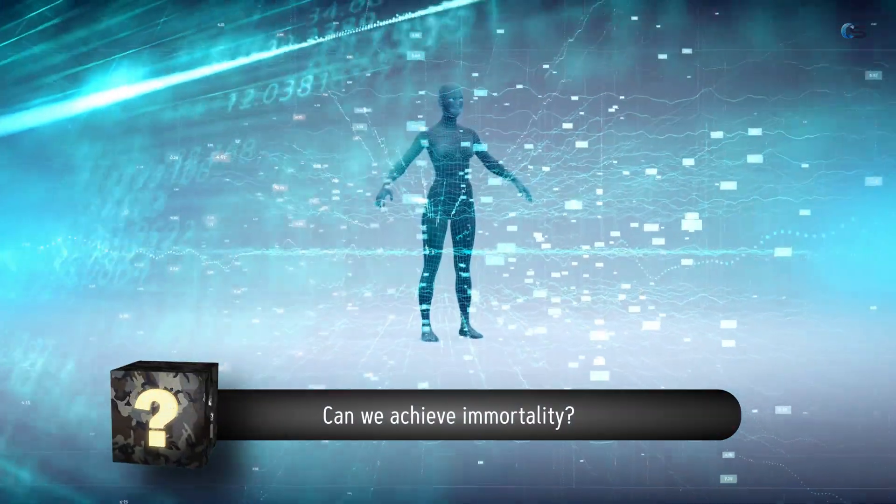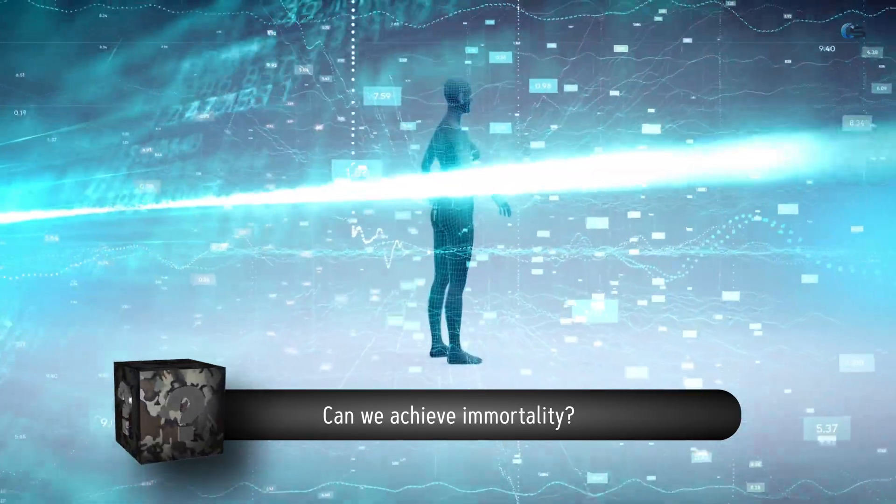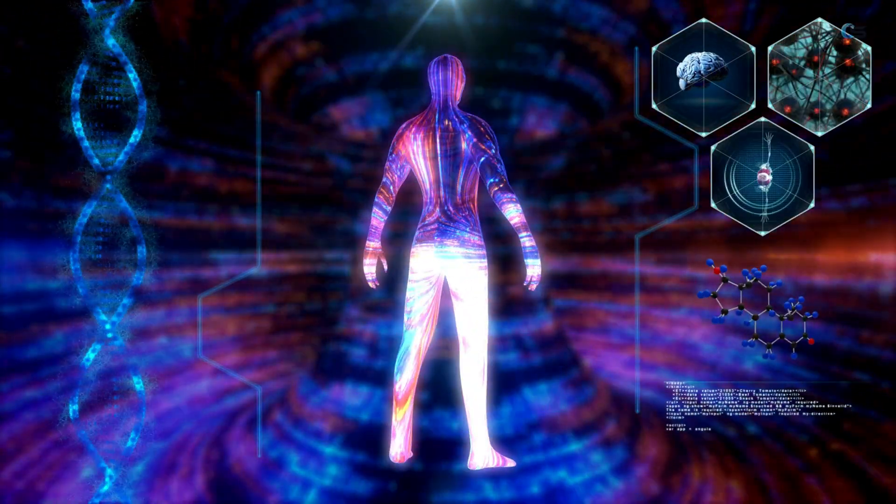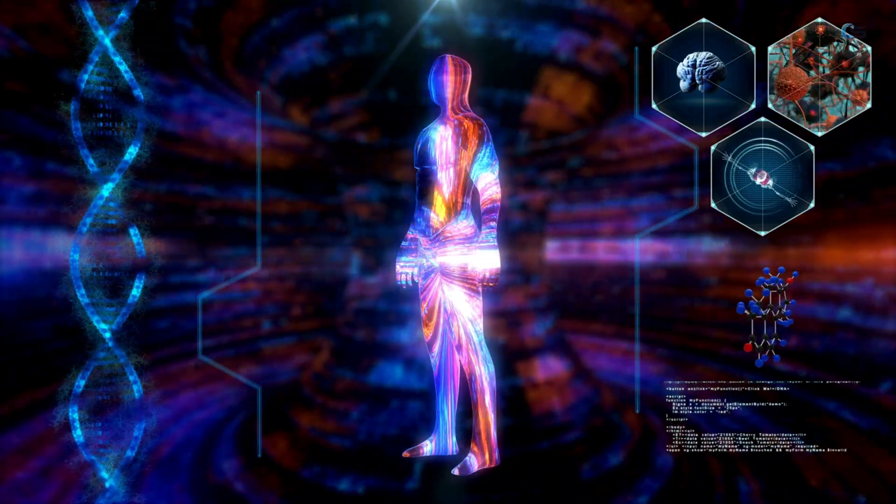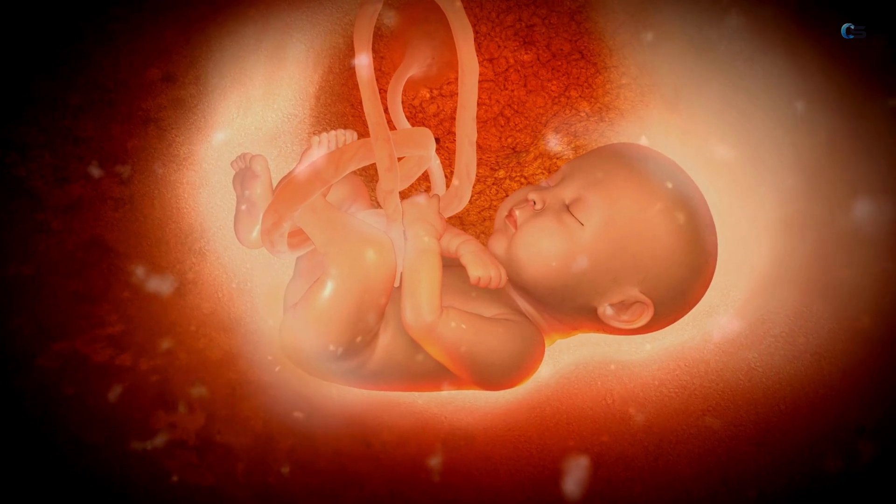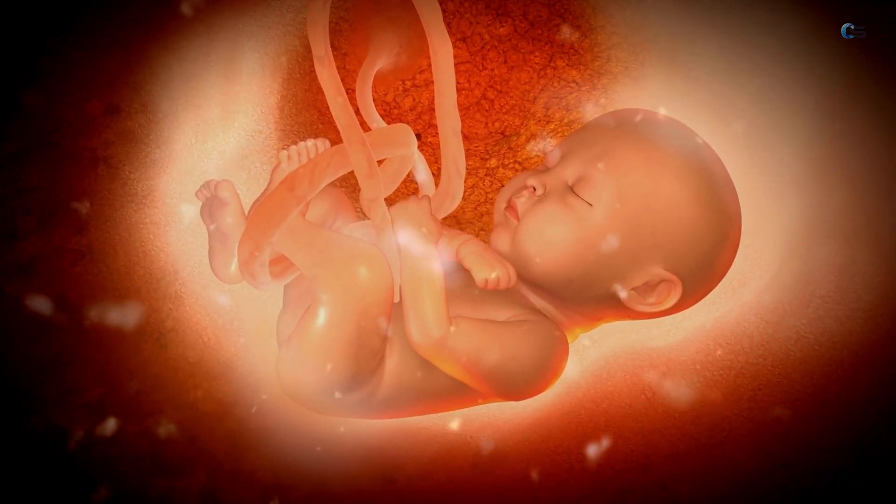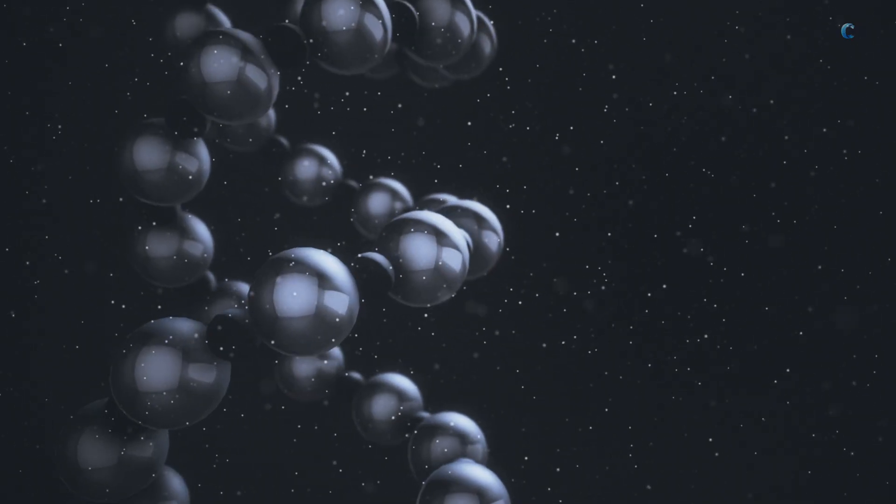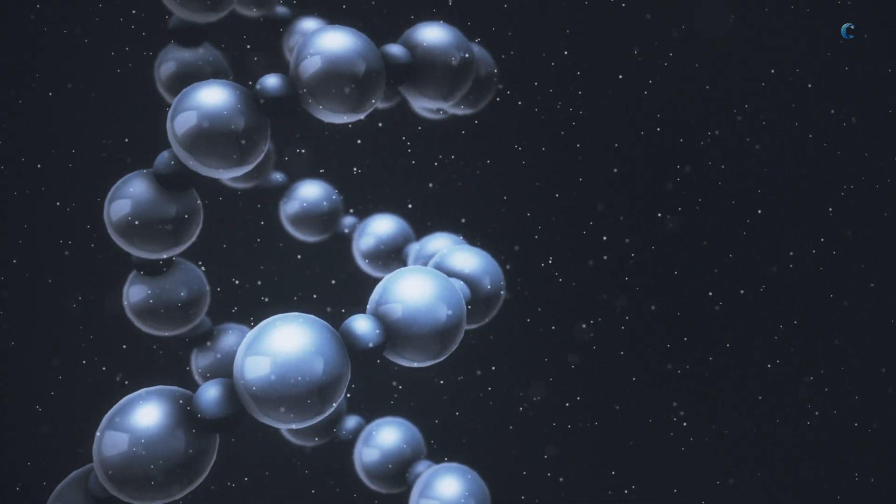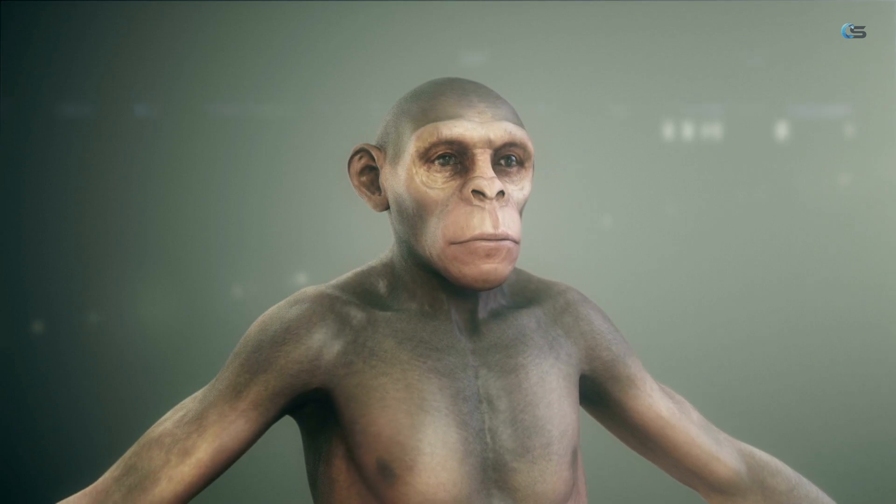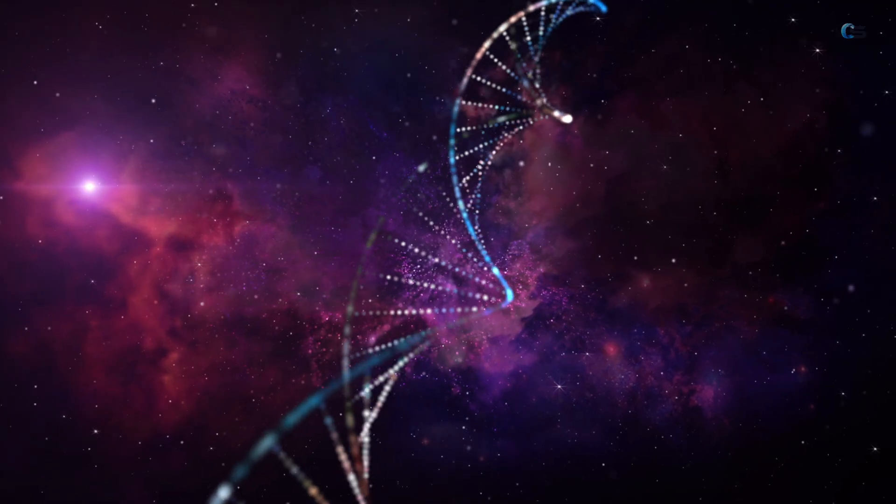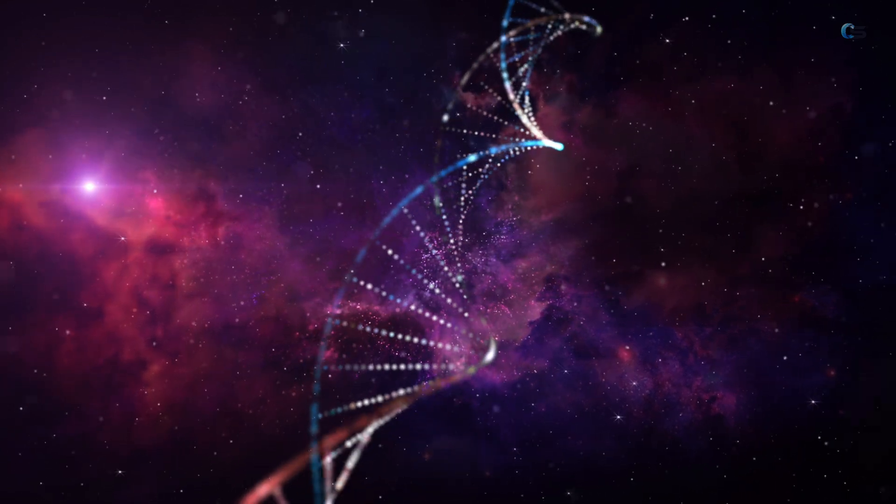Question number 15. Can we achieve immortality or significantly extend human lifespan? Extending human lifespan and potentially achieving immortality are topics of interest, but science has not yet found a way to halt or reverse the aging process conclusively. Extending human lifespan and the pursuit of immortality have been enduring interest for humanity. While science has made significant advancements in understanding the aging process and improving healthcare, achieving immortality or halting aging altogether remains an elusive goal. Achieving immortality or significantly extending human lifespan faces significant challenges. Some of these challenges include the complexity of the human body, ethical considerations, and the need for rigorous scientific validation of potential anti-aging interventions.